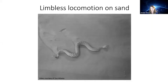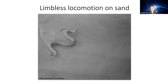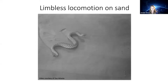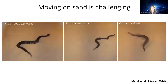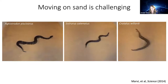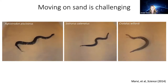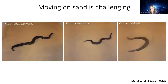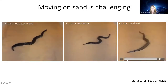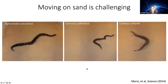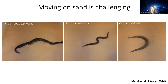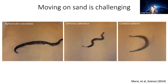This is a sidewinding rattlesnake — one example of effective movement in sand. Just to convince you that moving in sand is not easy for all snakes, these are three species that do not encounter sand in their natural habitats, and you can see they're all struggling in this challenging environment. This is what got me interested in what's special about sidewinders.